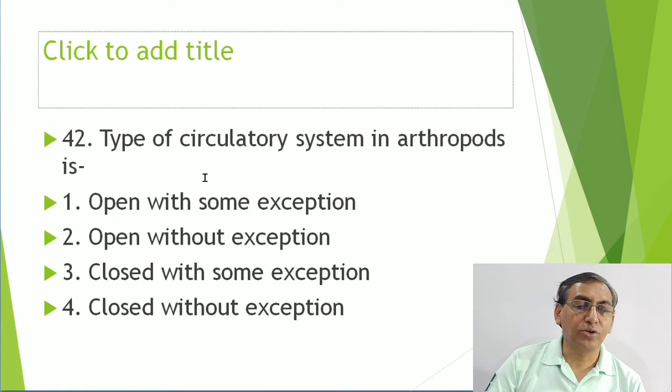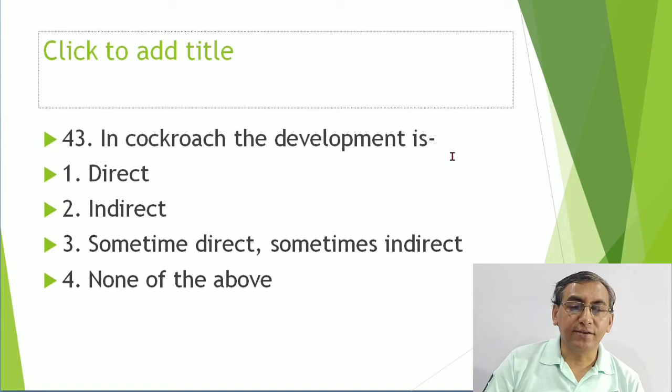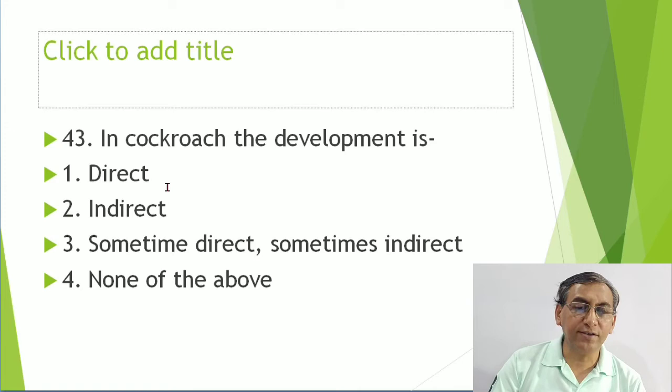In cockroach, paurometabolous development takes place - meaning gradual development. The development is direct with no larva stage in cockroach.